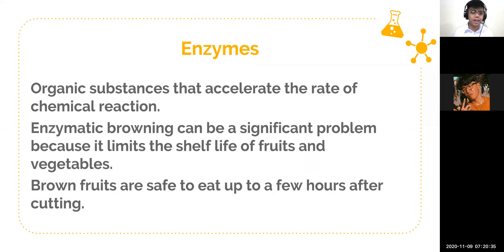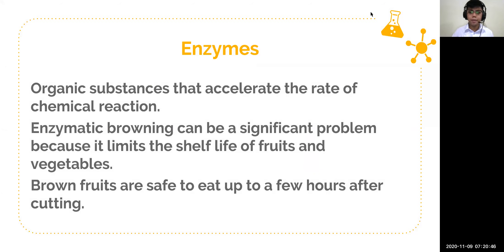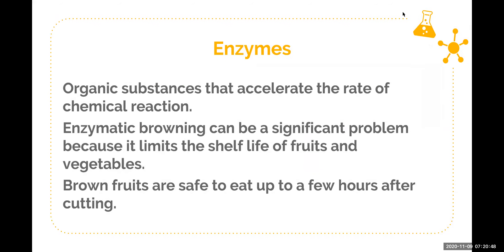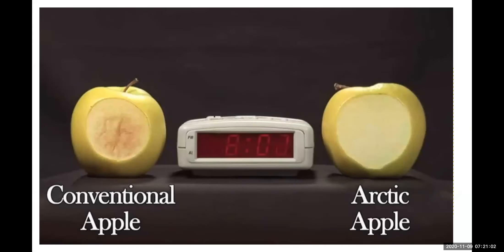In our bodies we also have a lot of enzymes. Enzymes are organic substances — they are actually proteins that accelerate the rate of chemical reactions. They are proteins that catalyze reactions. To catalyze means to speed up or facilitate the chemical reaction. We will learn how the enzyme does this.